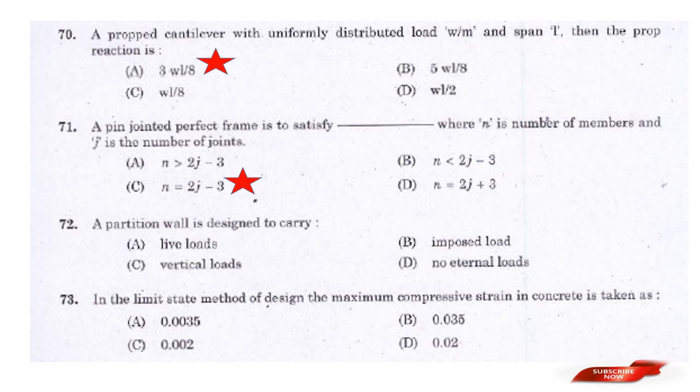Question: A partition wall is designed to carry — options: Live loads, Imposed loads, Vertical loads, No external loads. Answer: Option D — No external loads.